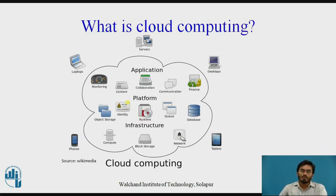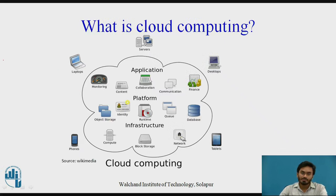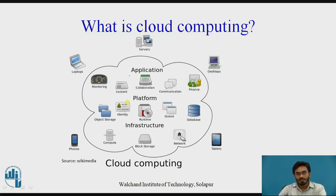If you look at the cloud computing architecture as shown on the screen, you have basically three things. The first one is the application layer, the second one is the platform layer, and the third one is the infrastructure. So cloud computing is composed of these three layers: application layer, platform layer, and infrastructure layer.